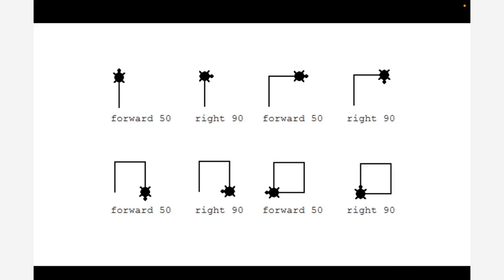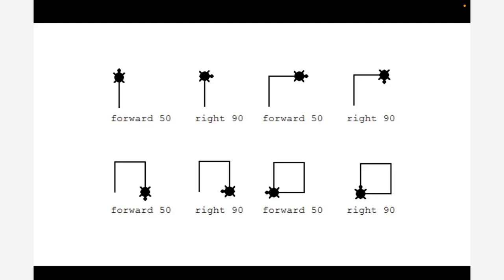What I love about this activity is we encourage students to try, we encourage students to make mistakes, we encourage students to learn from said mistakes, change variables, and try again — without touching a single textbook or worksheet. More powerful than that: supplementary angles, exterior angles — that's far beyond Johnny's curriculum. He's learning about curriculum far beyond the grade level he's in because he's engaged in this kind of experience. Those things taught me that in a world that changes overnight, the only strategy guaranteed to fail is not trying something new. A lot of this comes back to how we build the cultures and communities in our own classrooms.